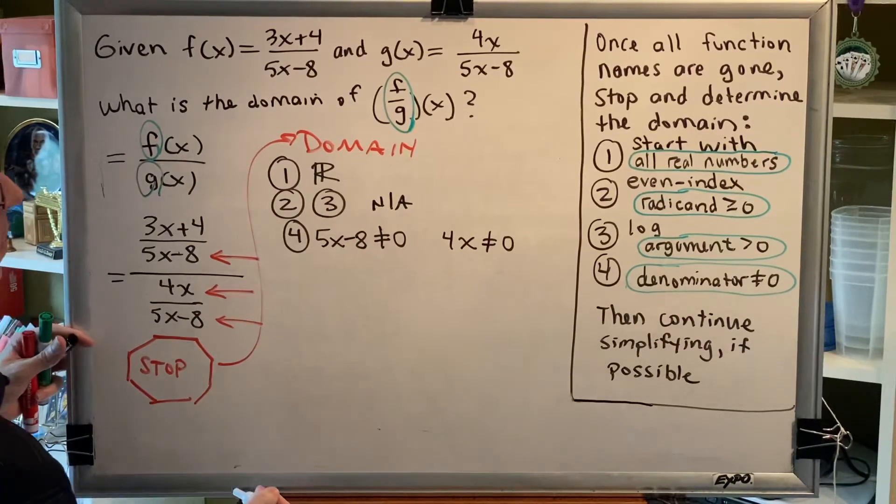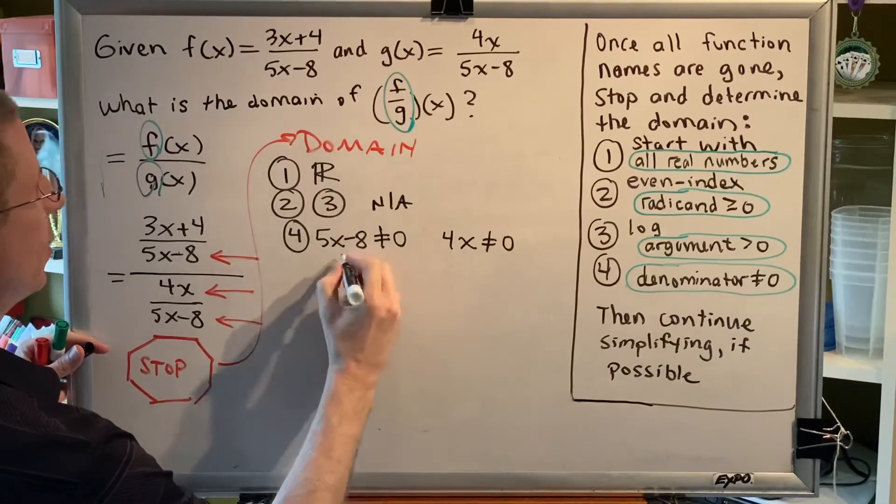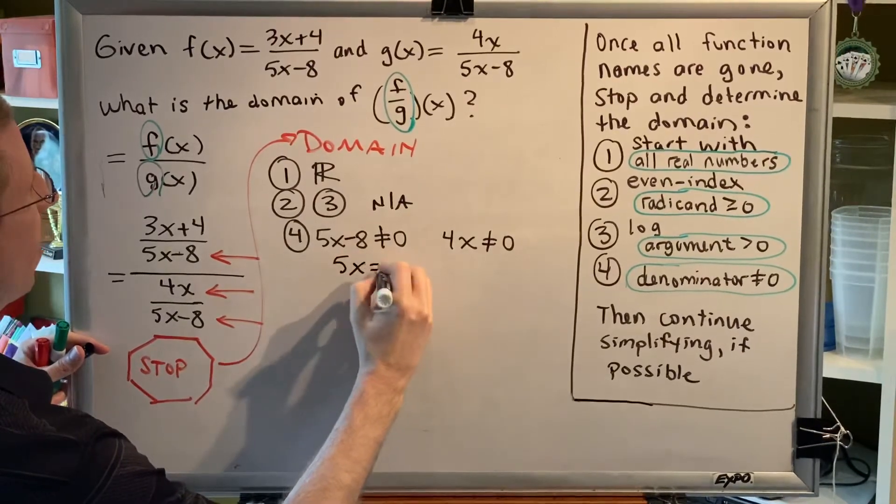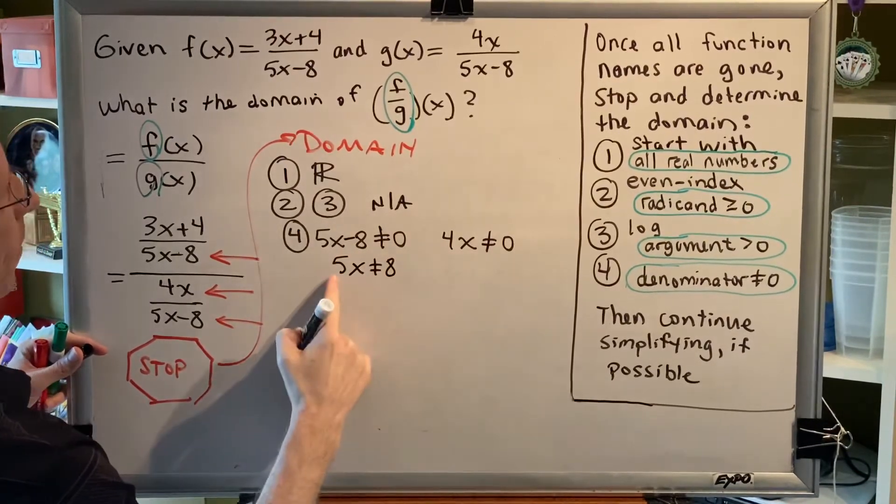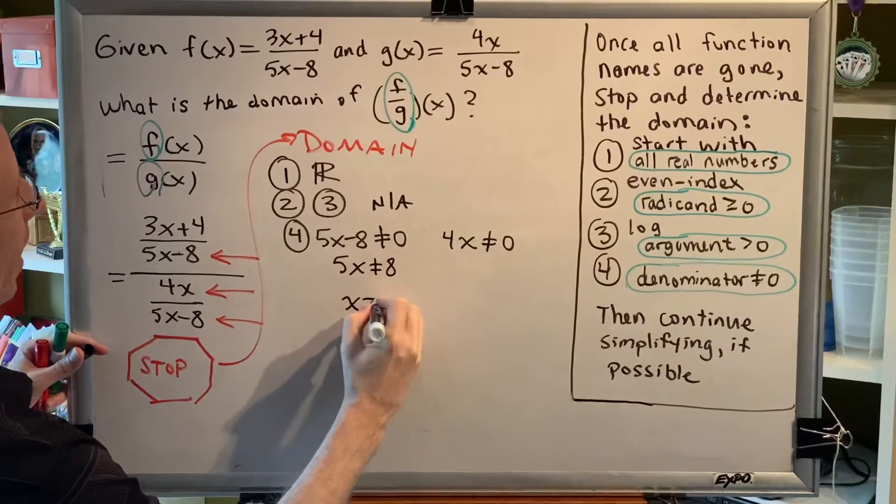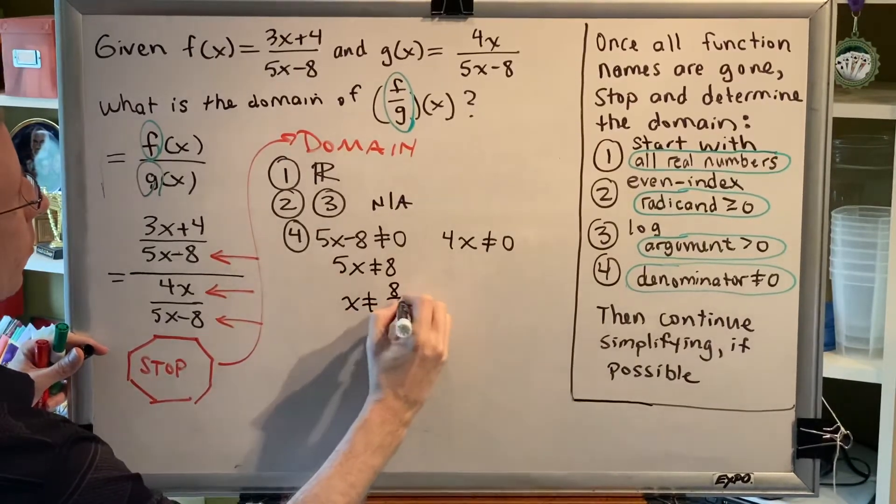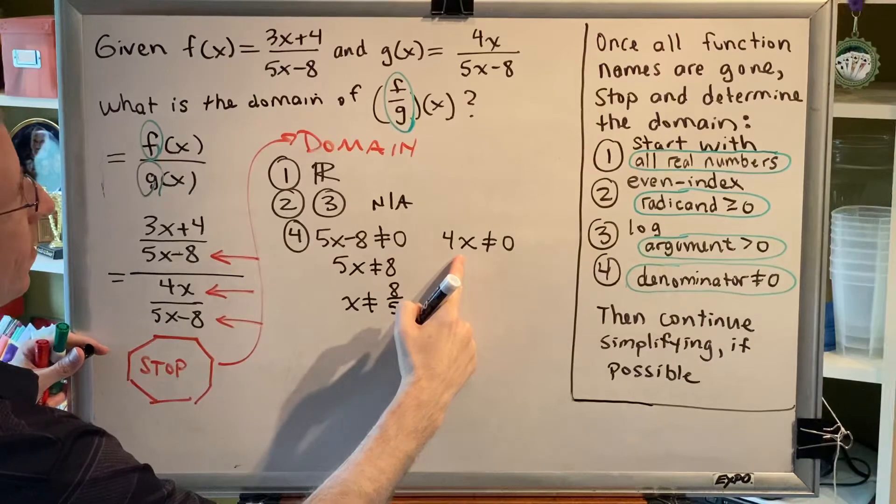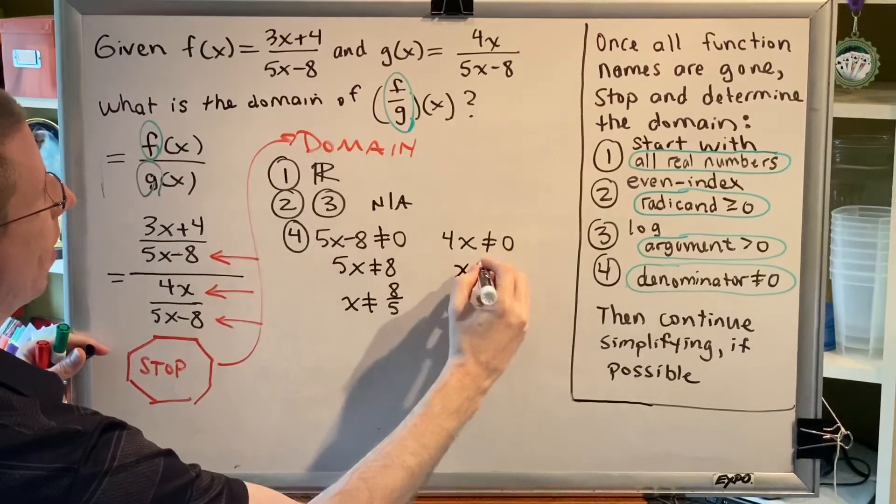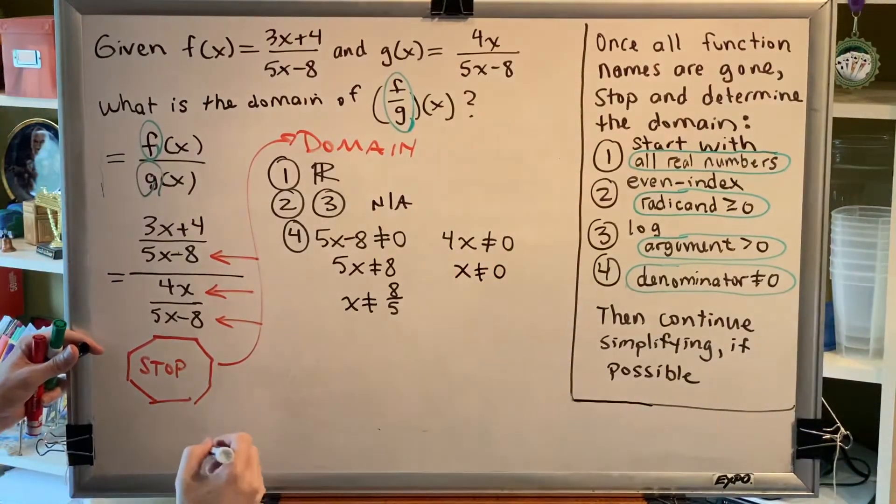Now solve both of these inequalities. Adding 8 to both sides, we get 5x is not equal to 8. Dividing by 5 on both sides, we get x is not equal to 8 fifths. For this inequality, dividing by 4 on both sides, we get x is not equal to zero.